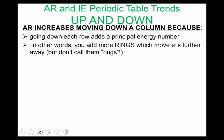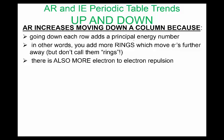So I have these summarized here. So the radius moving down a column. So because you go down each row, you add a principal energy number. In other words, you add more rings, which move electrons further away. We don't really want to call them rings. We should be referring to these as sublevels or subshells.